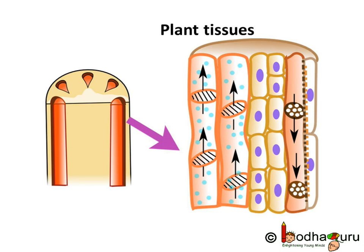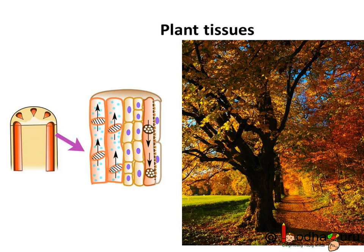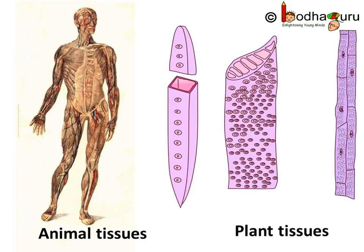Most of the cells in plants are dead and some of them act like a pipeline, some act like bricks, and most of these tissues are distributed all over the plant. The cells formed from meristematic tissues take up a specific role and lose the ability to divide, so they become permanent tissues. Thus, living and dead cells together maintain the life in a plant. We see that tissue as well as organ system design in plants and animals are different, as plants are adapted to a sedentary life whereas animals are adapted to active locomotion.